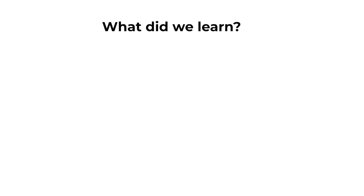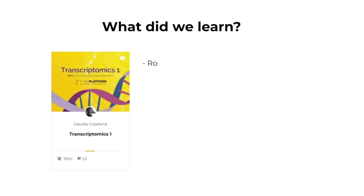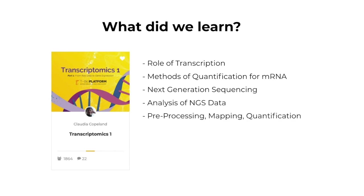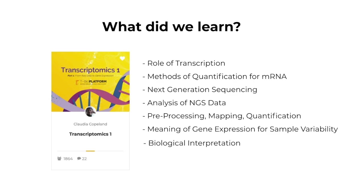Transcriptomics 1 was a detailed discussion of the role of transcription in cell function, methods of quantification for mRNA, an explanation of next-generation sequencing, and a guide on how to analyze RNA-seq data. In this course, we also talked about RNA-seq bioinformatics pipelines, covering the general steps of pre-processing, mapping, and quantification. Finally, we discussed the meaning of gene expression for sample variability before tying this to methods of biological interpretation.